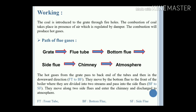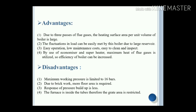The hot gases from the grate pass through the back end of the tubes, then move in a downward direction through the bottom flue to the front of the boiler, where they are divided into two streams and pass into the side flues. They move along the two side flues, enter the chimney, and are discharged to the atmosphere.